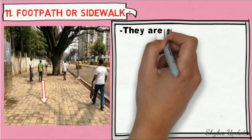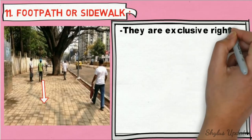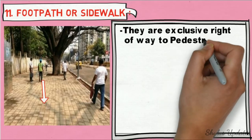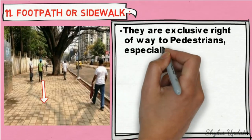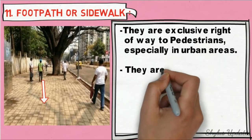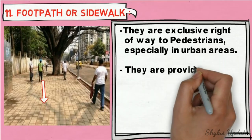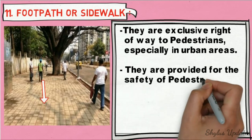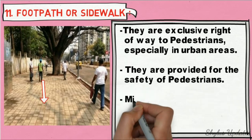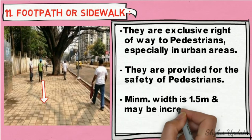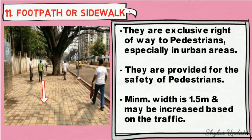Footpaths are exclusive right of way to pedestrians, especially in urban areas. They are provided for the safety of pedestrians. Minimum width is 1.5 meters and may be increased based on the traffic.